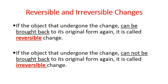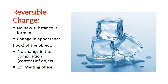Now let's see further properties of reversible change. In reversible change, no new substance is formed. There is change in the appearance of the object after the change. Appearance means how does it look. And there is no change in its composition. Composition means makeup. For example, melting of ice.